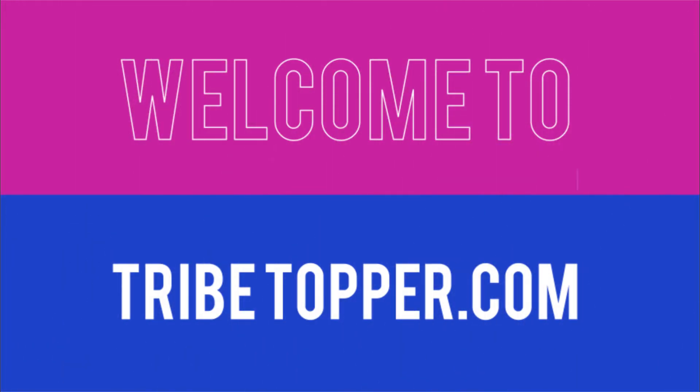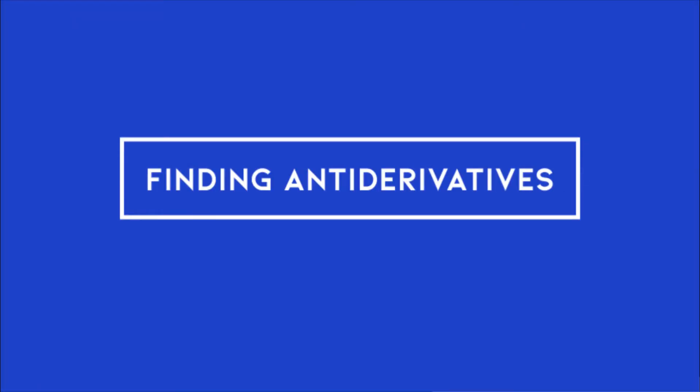Hello and welcome to tribetopper.com. So the question is dy/dx is equal to x squared upon x cubed plus 1. Now to find out by anti-differentiation what is y.